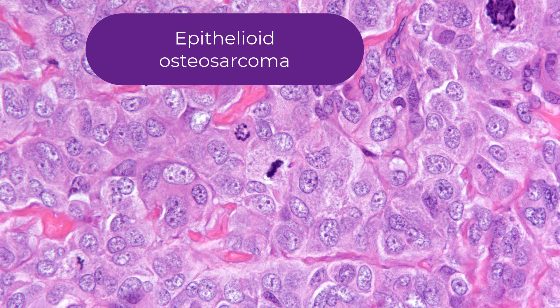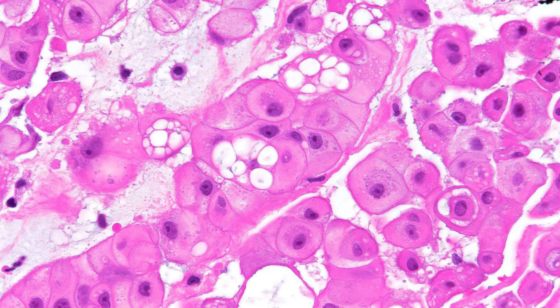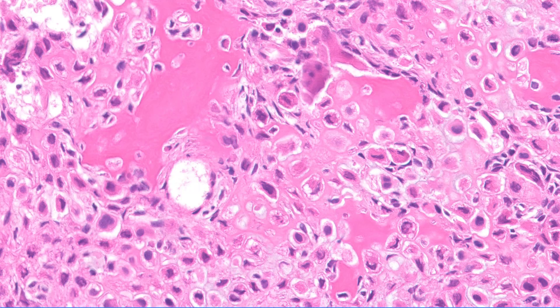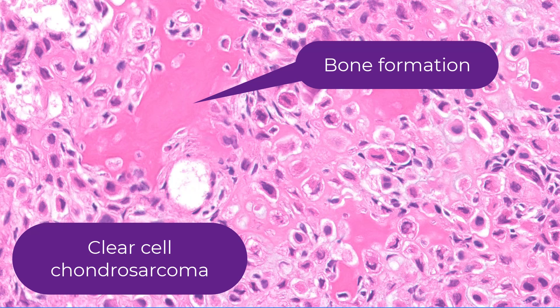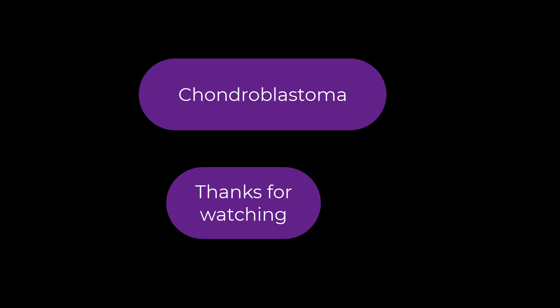In epithelioid osteosarcoma, there is no osteoid or no convincing osteoid on the slide. Another epithelioid tumor — not one you'd mistake for chondroblastoma — has very cohesive epithelioid cells with physaliphorous cells: this is a chordoma. Finally, clear cell chondrosarcoma also occurs in the epiphyseal area, has abundant eosinophilic cytoplasm and grooves, but notably has prominent bone formation — something you will not see in a chondroblastoma.